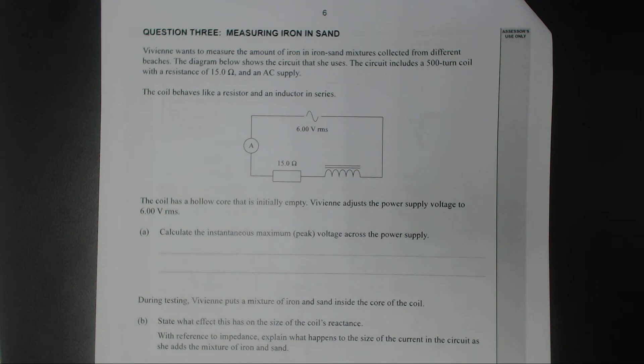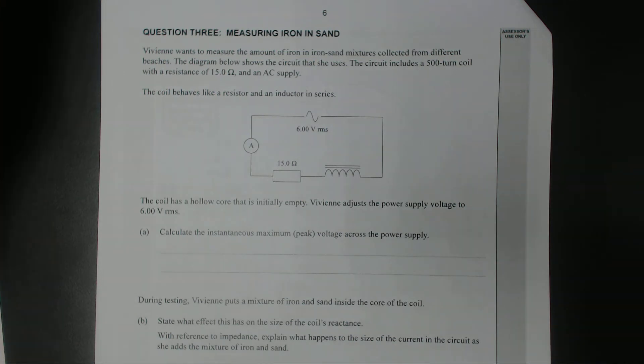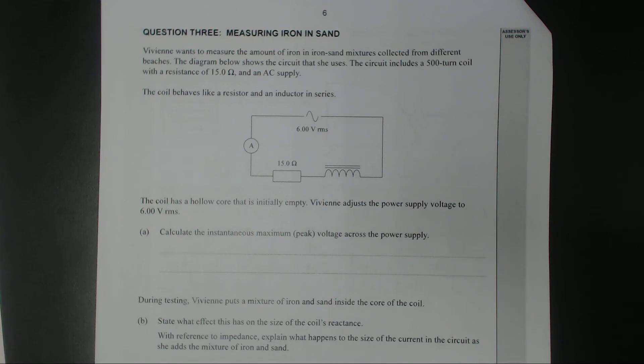Vivian wants to measure the amount of iron in an iron-sand mixture collected from different beaches. The diagram shows the circuit she uses, which includes a 500-turn coil with resistance 15 ohms and an AC supply. The coil behaves as an inductor in series, so this is an LR circuit.